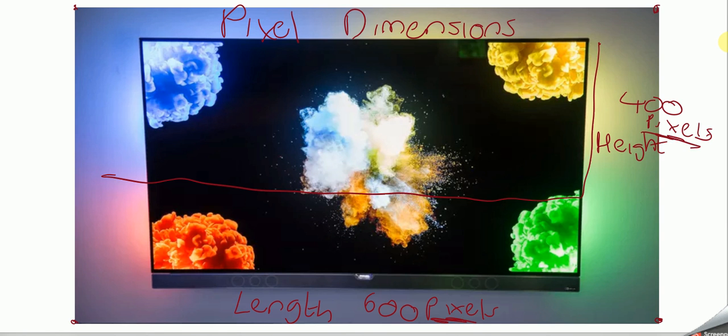So if you're ever asked a question where it gives you a picture with like 800 and 200, and it says what are the pixel dimensions for this, you would say 800 width slash length, depending on what you want to call it, and 200 height.